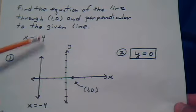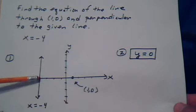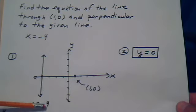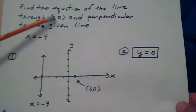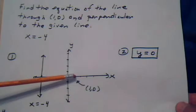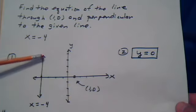This is x equals negative 4. So go through 1, 2, 3, 4. This is negative 4. This line has an equation of x equals negative 4. The point they gave us is this one. So the other line has to go through this point and be perpendicular to this one.